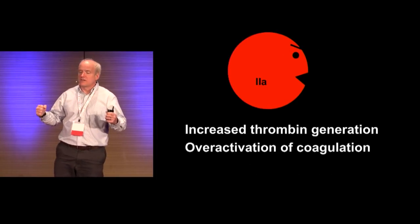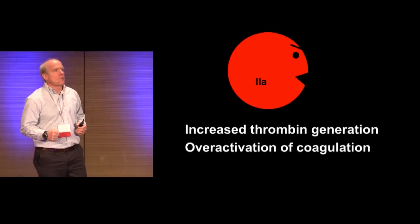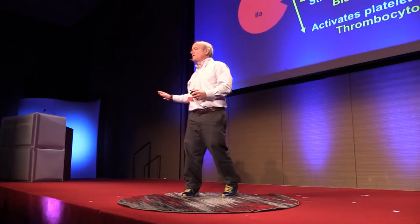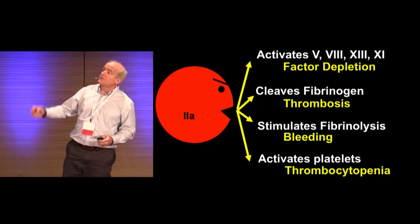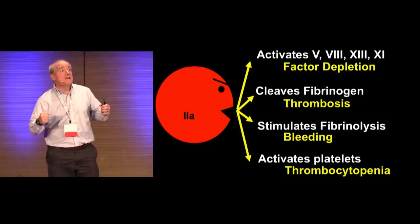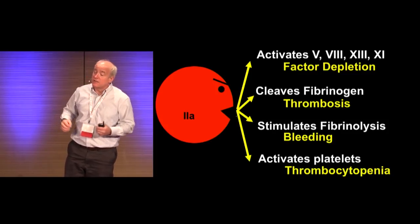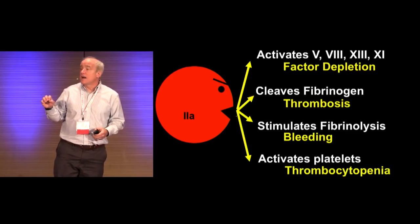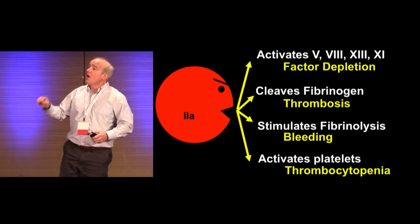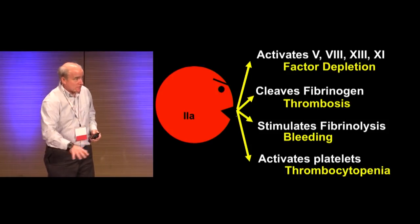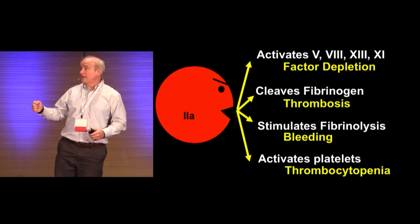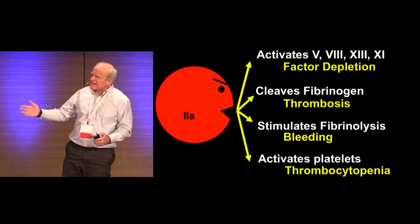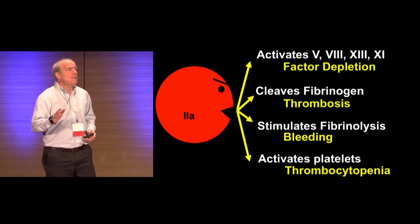What happens is you get excess generation of thrombin, and this leads to over-activation of coagulation. You get factor depletion, you cleave fibrinogen, you get thrombosis, but you also get powerful stimulation of fibrinolysis — so you get tremendous secondary fibrinolysis leading to bleeding and clot breakdown. You get activation of platelets, but this activation actually leads to thrombocytopenia. So in DIC there's over-activation of thrombin leading to factor destruction — that's why most people with this bleed — and stimulation of fibrinolysis, which aggravates the bleeding. There are rare forms of DIC without secondary fibrinolysis, but it's usually cancer or other obvious things.